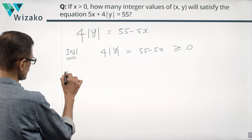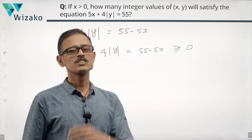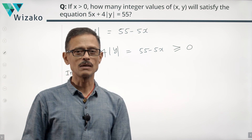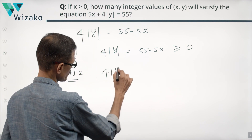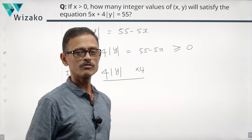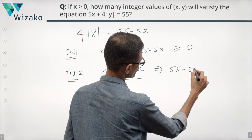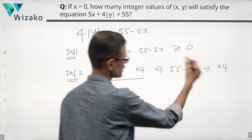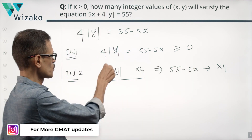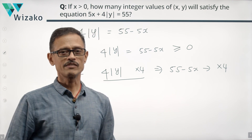Step two — the second inference, equally important: y is an integer, which means modulus of y is an integer, which means 4 times modulus of y will be four times an integer — meaning it's a multiple of four. So 4 modulus of y is a multiple of four. If 4 modulus of y is a multiple of four, and we know 4 modulus of y equals 55 minus 5x, the immediate inference is that 55 minus 5x is a multiple of four. Because y is an integer, modulus of y is an integer, and four times an integer is a multiple of four. So 55 minus 5x is a multiple of four.